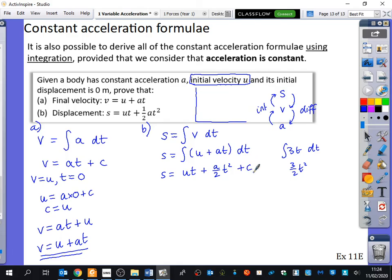Okay, now what does the question tell us at the start? That's about not the start of the question. What does it tell us at the start of this journey? The initial displacement is 0. It says that here, the initial displacement is 0, which means that the displacement is 0 when the time is 0. So you get 0 equals U multiplied by 0 plus A divided by 2 multiplied by 0 squared plus C. So C is equal to 0, which tells me that S is equal to U T plus, instead of writing A over 2 T squared, I'm just going to write a half A T squared. And so there you have an alternative proof of why S equals U T plus a half A T squared.